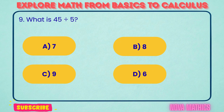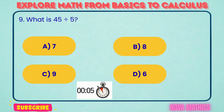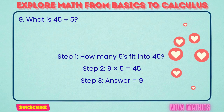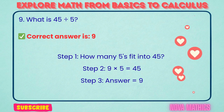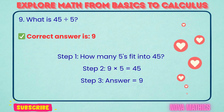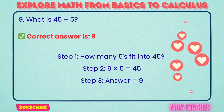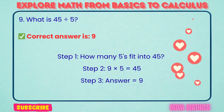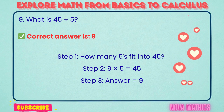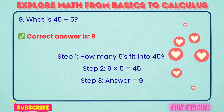9. What is 45 divided by 5? Correct answer is 9. 45 divided by 5 equals 9. We find this because 5 times 9 is 45.